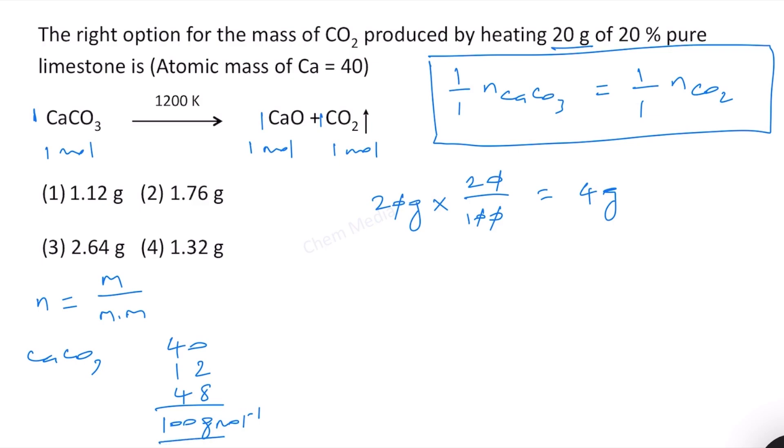Therefore, the number of moles of CaCO₃ is equal to mass 4 grams, molar mass is 100 grams per mole. And therefore this is 4 by 100 moles. Therefore the mass for CO₂ is equal to 4 by 100 moles.